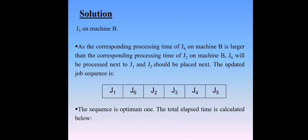J6 will be processed next to J1, and J2 should be placed next. The updated job sequence — that means the final sequencing order: first place J1, second place J6, third place J2, fourth place J3, fifth place J4, last place J5. So this is the optimum sequencing order.